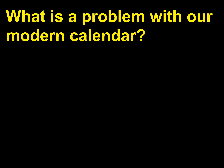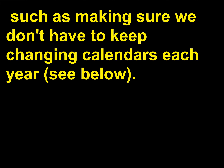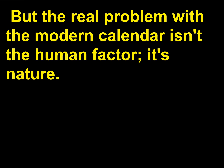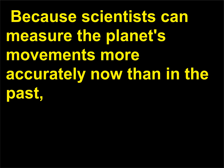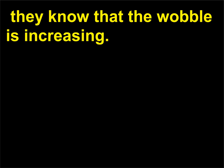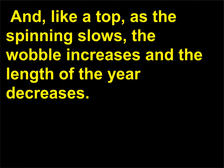What is a problem with our modern calendar? The modern calendar could use some small changes, such as making sure we don't have to keep changing calendars each year. But the real problem with the modern calendar isn't the human factor — it's nature. As our earth orbits around the sun, it wobbles like a spinning top in a process called precession. Because scientists can measure the planet's movements more accurately now, they know that the wobble is increasing — this is because the tides caused by the pull of the sun and moon are slowing the earth's spin. And, like a top, as the spinning slows, the wobble increases and the length of the year decreases.